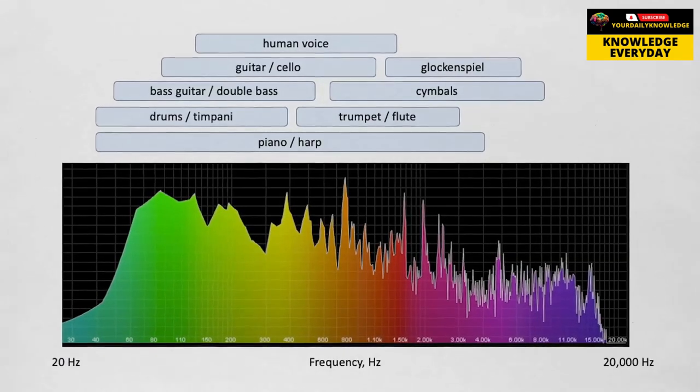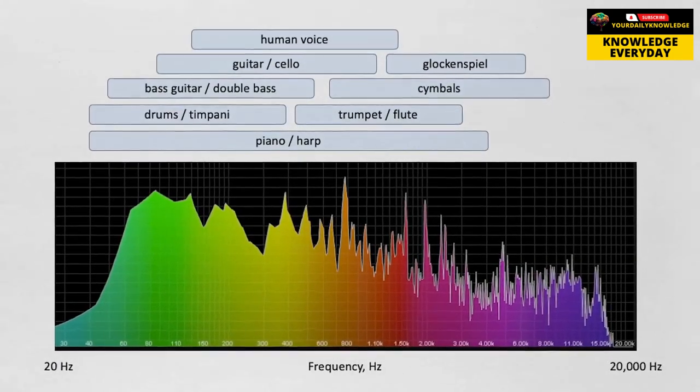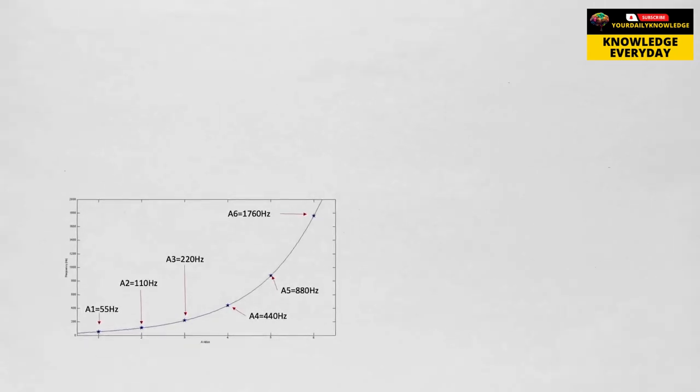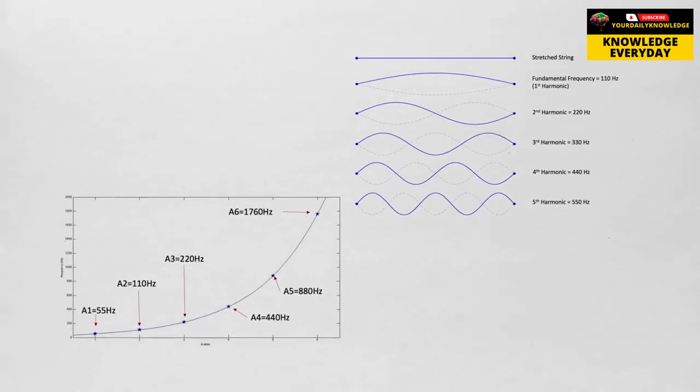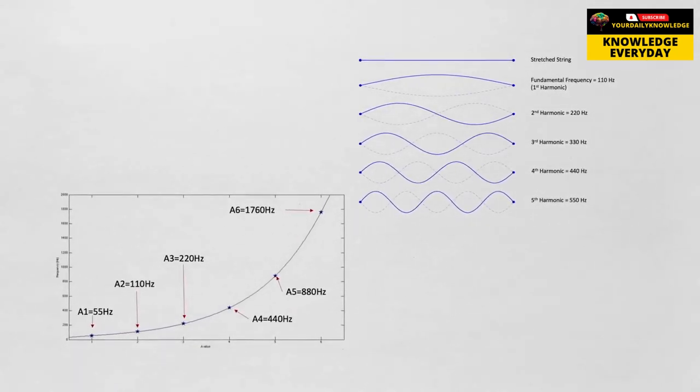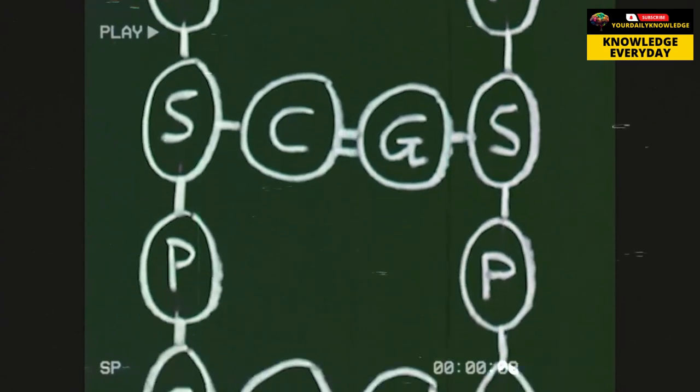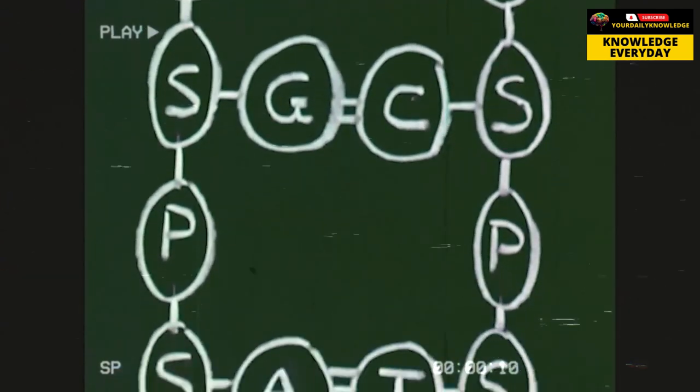When we listen to music, we experience a symphony of different frequencies and harmonies. Each musical note corresponds to a specific frequency and wavelength, creating a complex tapestry of sound. These musical vibrations, just like any other sound waves, have the potential to interact with our bodies at a fundamental level.